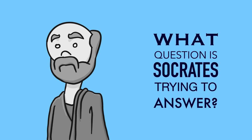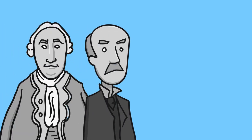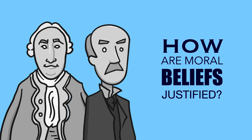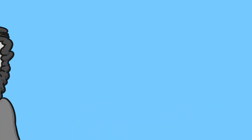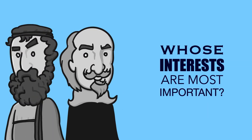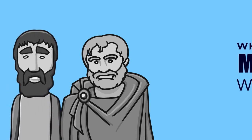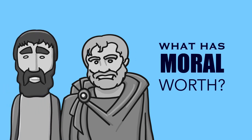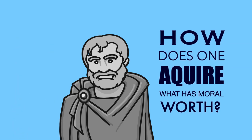What question is Socrates trying to answer? Keep in mind he's doing something really different from any of the philosophers we've looked at so far this semester. Remember the previous philosophers: Hume and Sumner trying to answer how moral beliefs are justified; Glaucon and Hobbes trying to answer whose interests are most important; Aristotle and Epicurus trying to answer what has moral worth. The second reading of Aristotle tries to answer how one acquires what has moral worth.